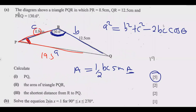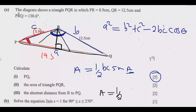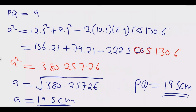For part (iii), the shortest distance from R to PQ: we draw a perpendicular from R to PQ, calling its length h. The base PQ is 19.5 cm. We know the area is 42.2 cm squared. Using the formula Area equals half times base times height, we can rearrange: 2A equals base times h, so h equals 2A over base.